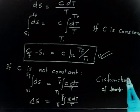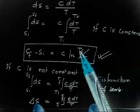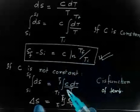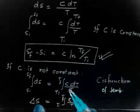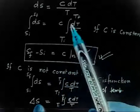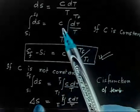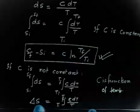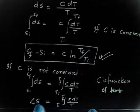So if temperature is changing from Ti to Tf, the entropy change is given by ΔS = C ln(Tf/Ti), provided C is constant. If C is a function of temperature, it cannot be taken outside the integral and must be kept inside for integration.